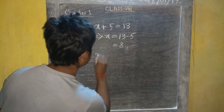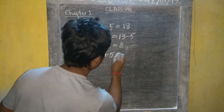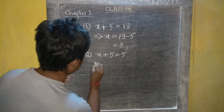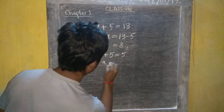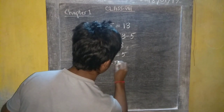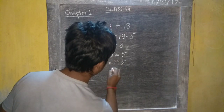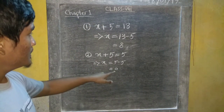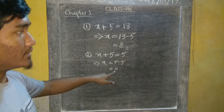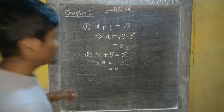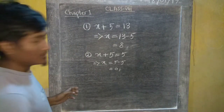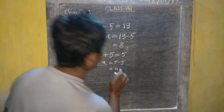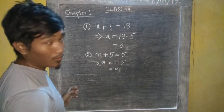Second example: x plus 5 equal to 5. Solution: x equals 5 minus 5, equal to 0. Zero is not a natural number, so we say 0 is a whole number.